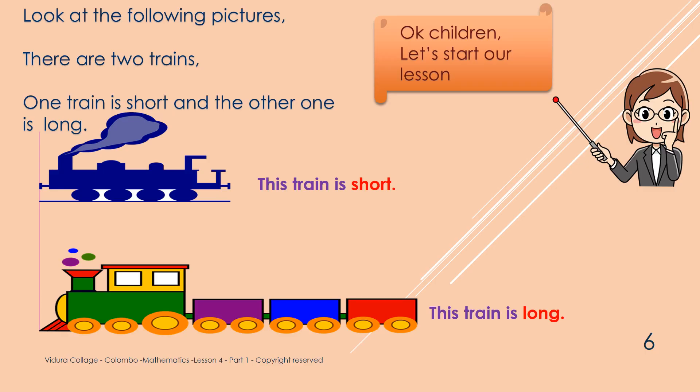Now we will go through some examples. Ok, what are those pictures you can see here? Trains. Can you see that one train is long and other train is short? So, I hope you can clearly see the difference between long and short trains.